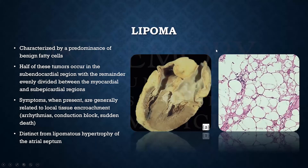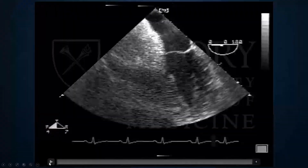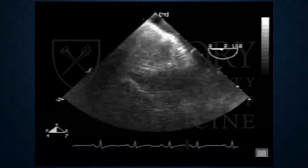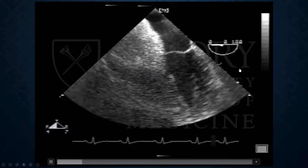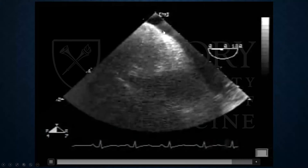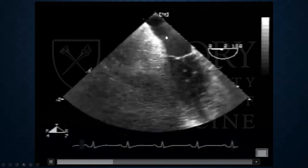Lipomas are the second most common benign cardiac tumor. Histopathologically, they're very similar to lipomas in other parts of the body — a benign proliferation of adipose tissue. Half of these tumors present in the subendocardial region, and the other half are within the myocardium or subepicardial regions. They most commonly present with mass effect or arrhythmias from conduction block. A 21-year-old female presented to Grady with an enormous right atrial lipoma that involved parts of the posterior left atrium, requiring large atrial reconstruction with bovine pericardium.